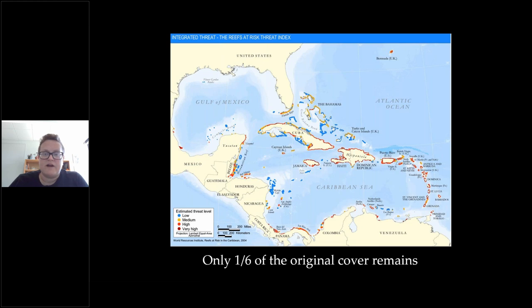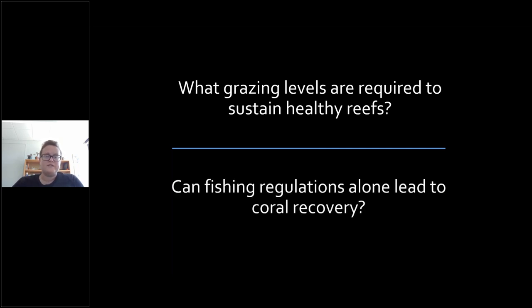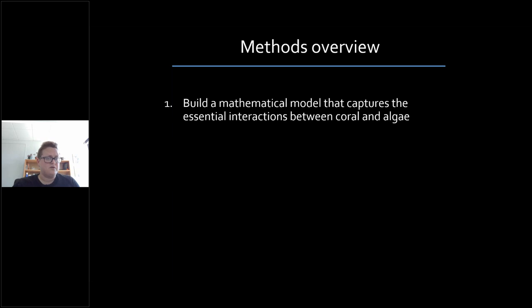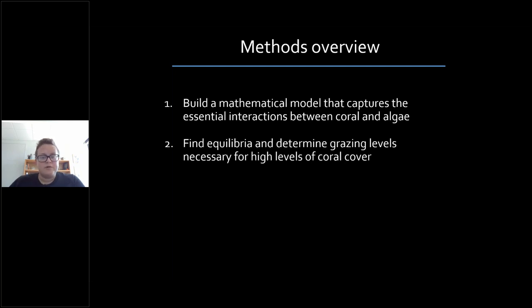My graduate work looked at the question of overfishing and whether fishing regulations can preserve the reef. About one-sixth of the original coral cover remains from when the urchins died off — a pretty dramatic decline. The questions we wanted to get at are: one, what grazing levels are required to sustain healthy reefs? And two, can fishing regulations alone lead to coral recovery? We wanted to look at a mathematical model of the essential interactions between coral and algae, think about equilibria and how grazing plays a role.